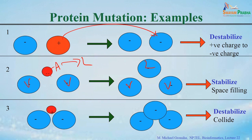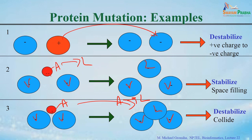On the other hand, if there are two valines and you mutate alanine to leucine, there is no space for leucine to accommodate because the space is very limited — only alanine can fit. In this case, it will create steric hindrance and destabilize the protein.